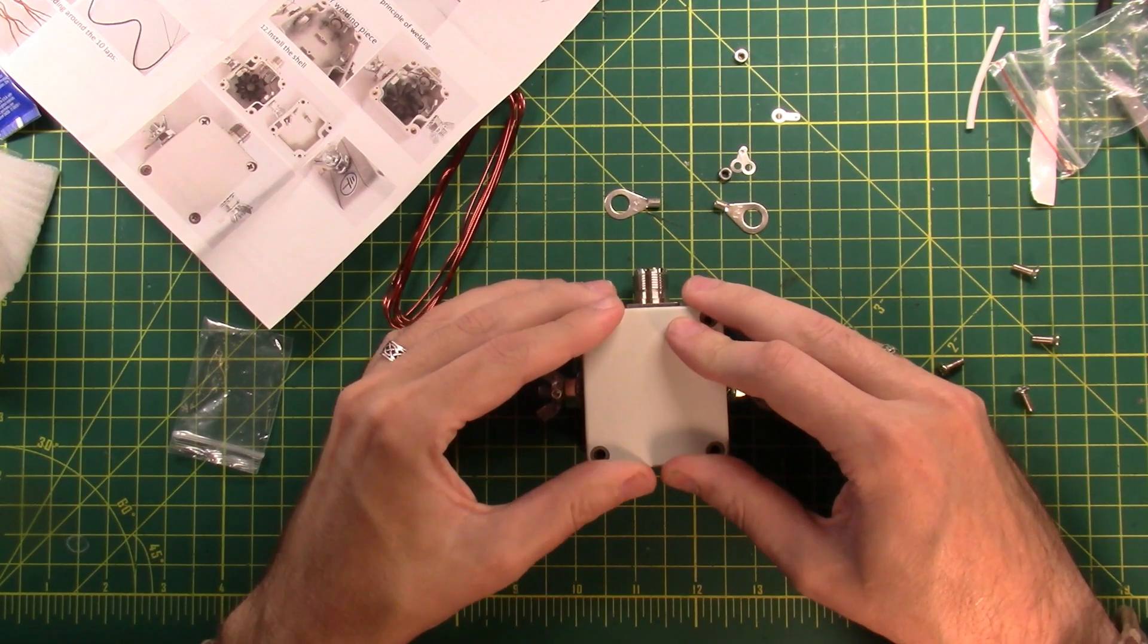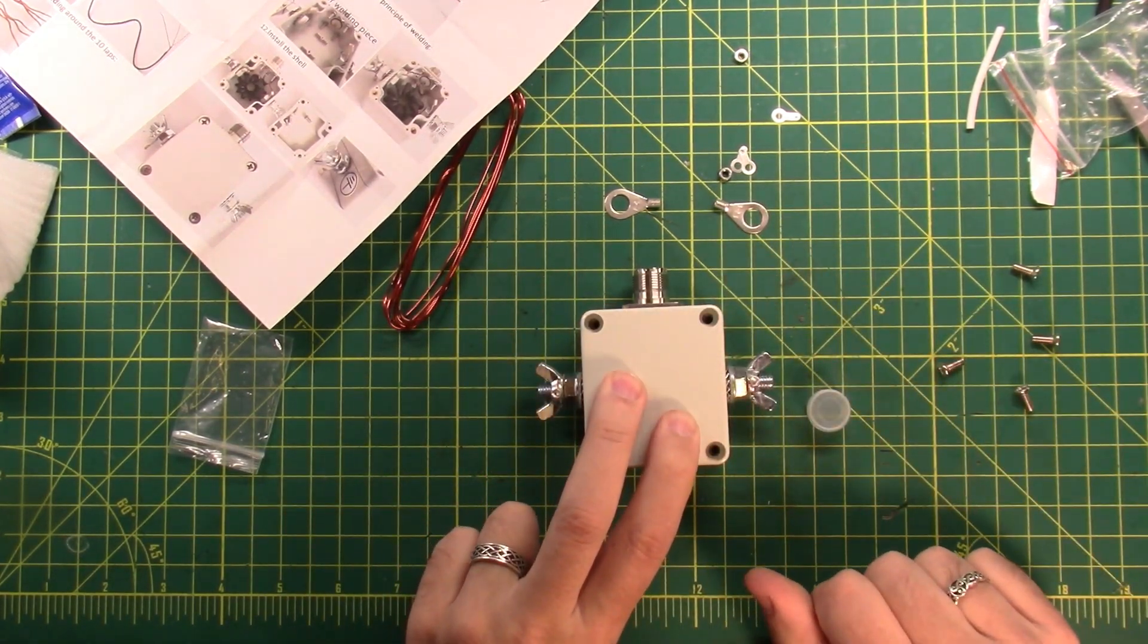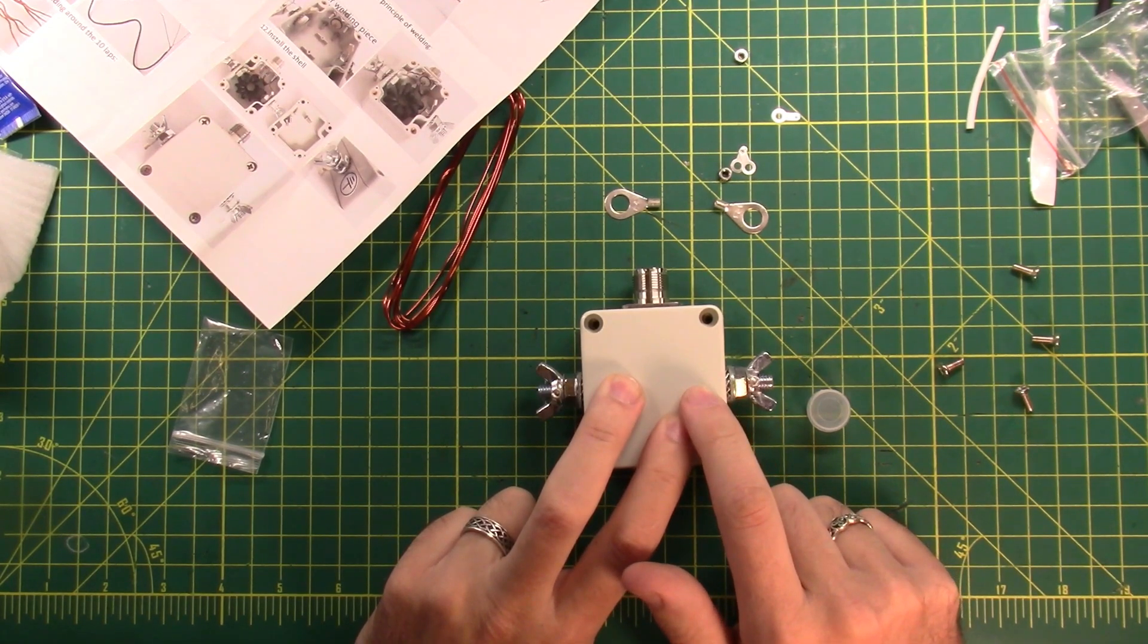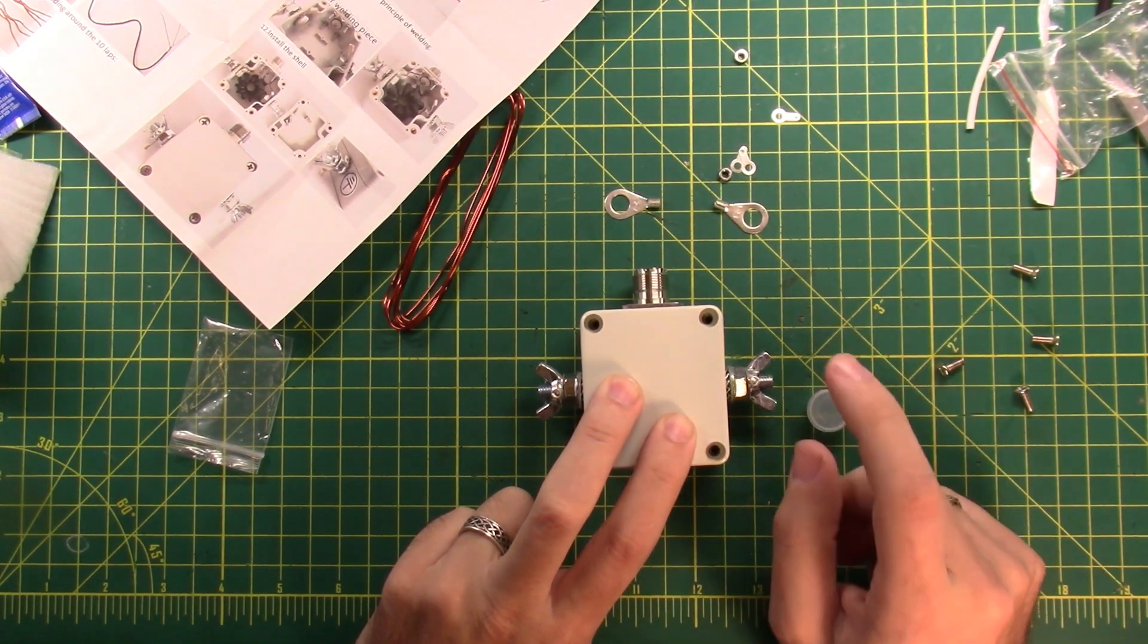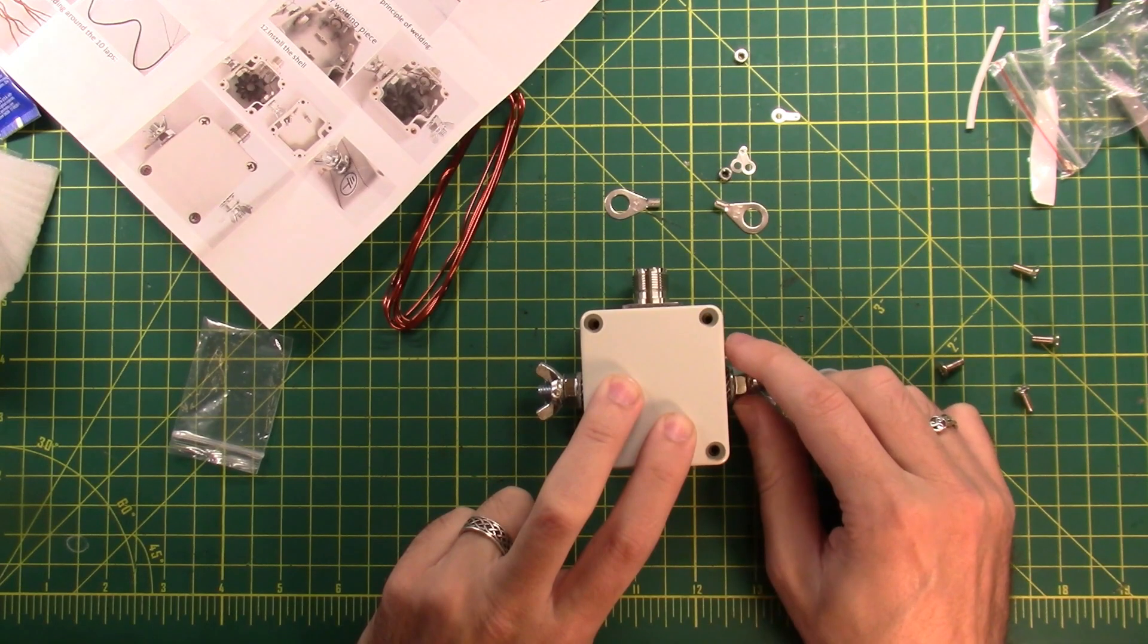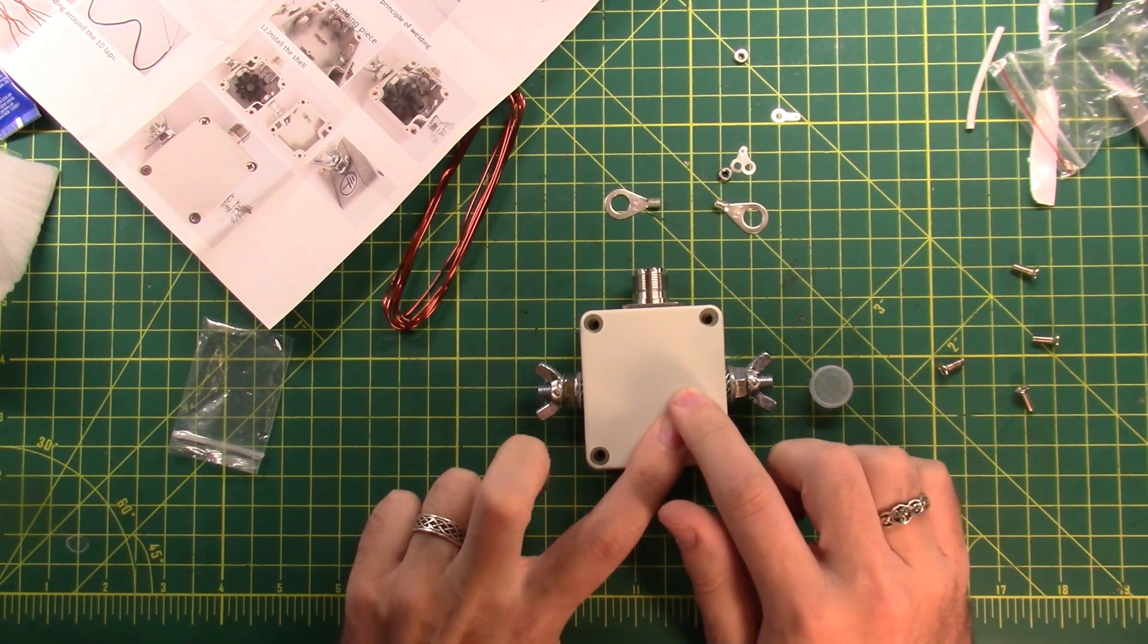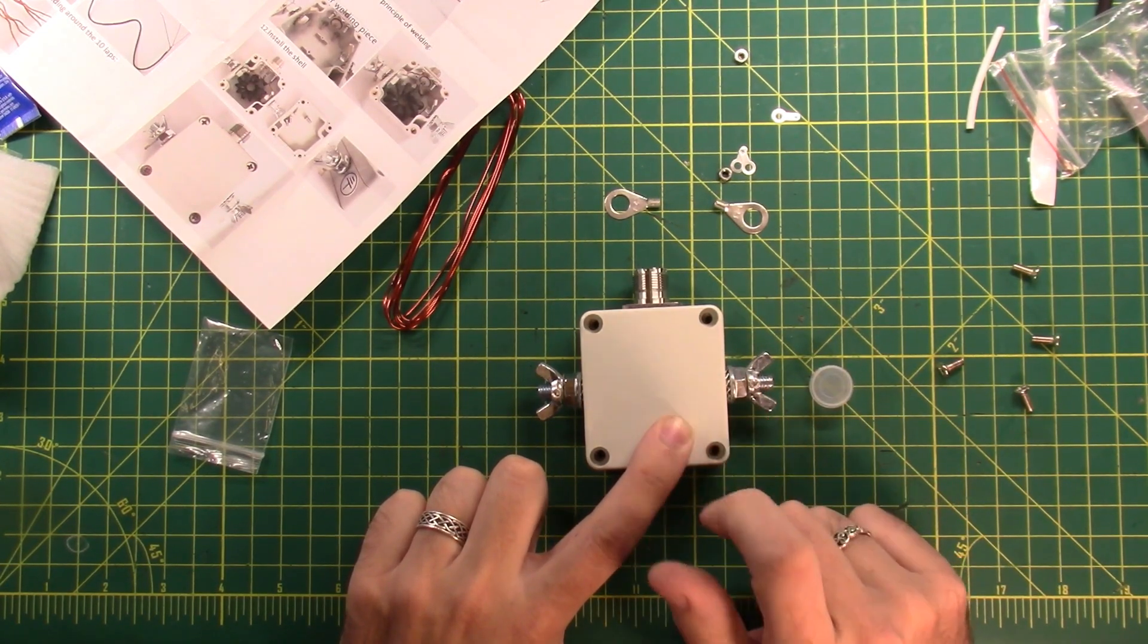That's it, that's a tight little working space but you could get it done. And then this would be either a one-to-one for a dipole center or a nine-to-one for a random wire antenna. Or you could do a loop antenna or an off-center fed dipole with the four-to-one.